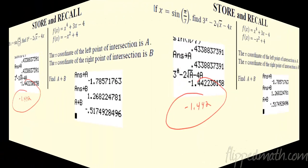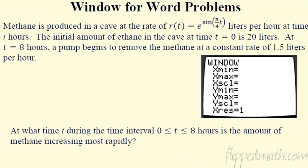The hardest part — don't freak out. This won't all make sense yet; I just want to get you in the mindset. On free responses, they like to give you weird functions. For example: methane in a cave is produced at a certain rate — some crazy-looking equation. The rate is in liters per hour over time t in hours. The initial methane at time zero is 20 liters; at t = 8 hours a pump begins to remove it.